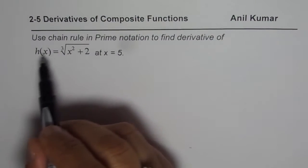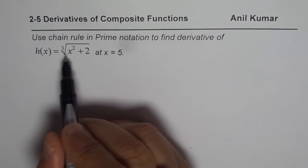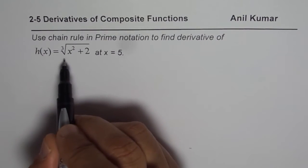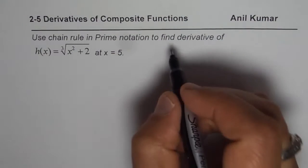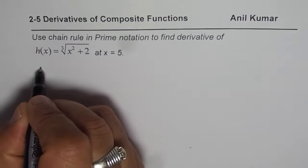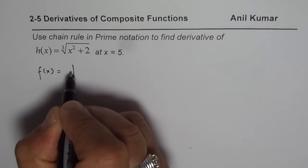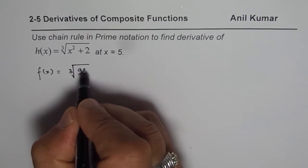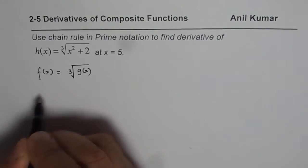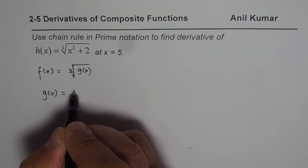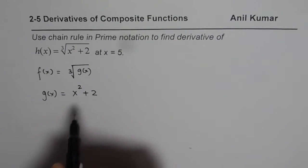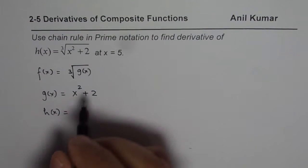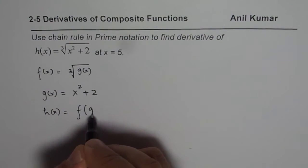To make h(x) a composite function, let's break the cube root of x squared plus 2 as a composition of two functions. Consider f(x) equals the cube root of g(x), where g(x) equals x squared plus 2. So now h(x) is f of g(x).